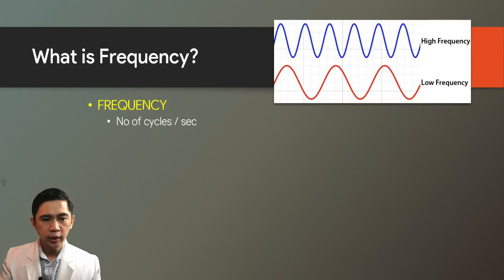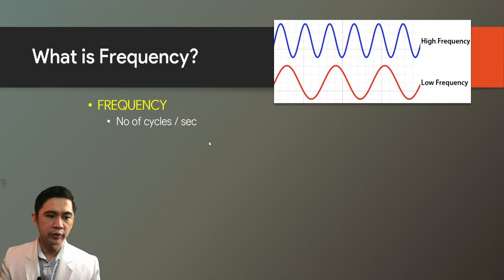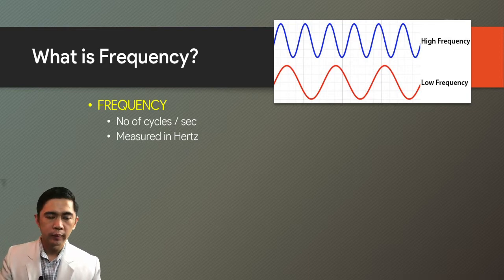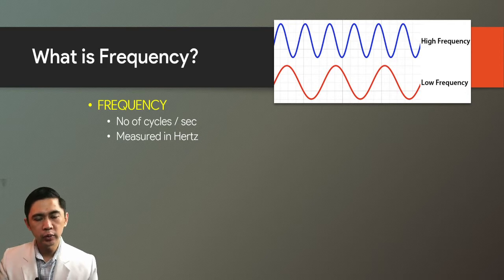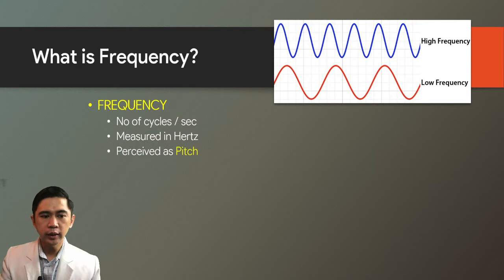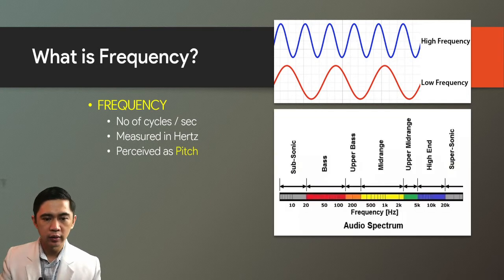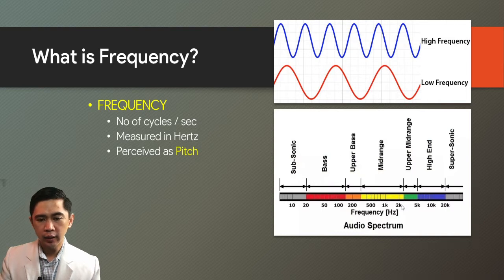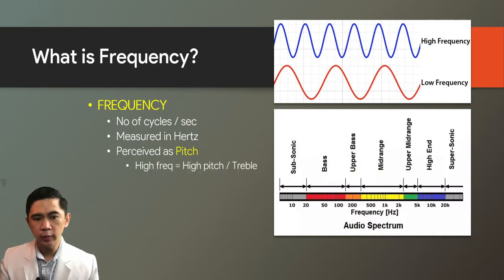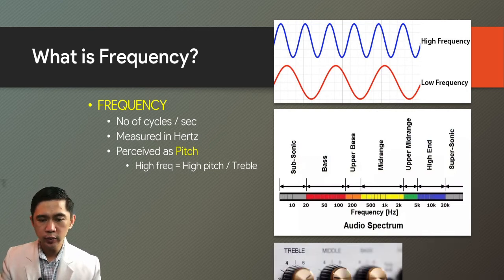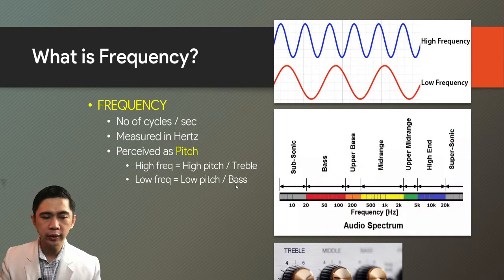Frequency is the number of cycles per second. A high frequency wave has more cycles than a low frequency wave, and frequency is measured in hertz—50 Hz, 100 Hz; when it reaches 1,000 and above, we abbreviate it to kilohertz. In hearing, we perceive frequency as pitch. Lower frequencies are heard as bass, and higher frequencies are heard as treble or a high note. High frequency equals high pitch, and low frequency equals low pitch or bass, as we see on sound system equalizers.